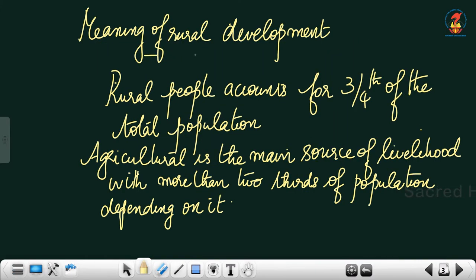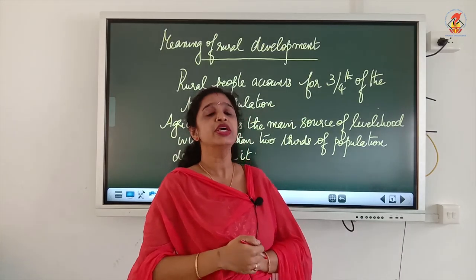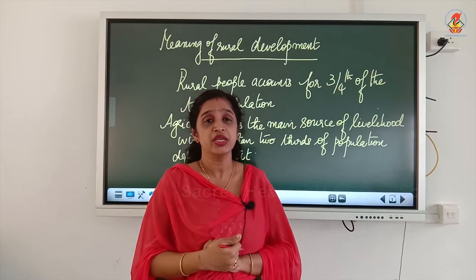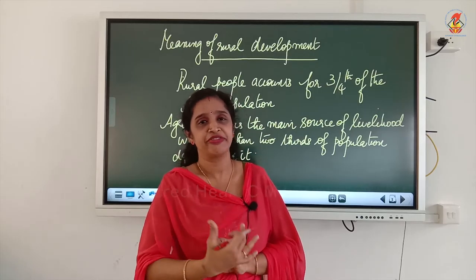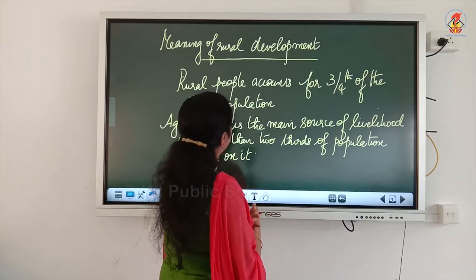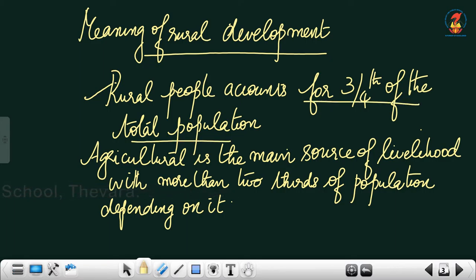Now let us learn the meaning of rural development in detail — what all aspects come under this topic. Point number one: rural people account for three-fourths of the total population of our country. From that you can imagine the importance of rural development.